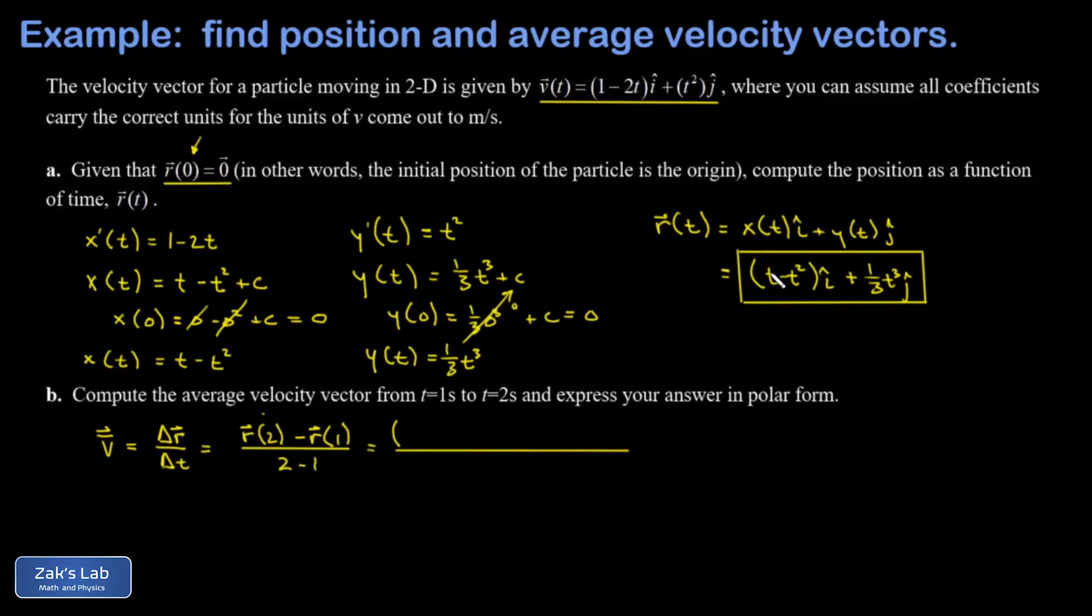And when I do that I get a two minus two squared for the i hat piece, that's two minus four or negative two. And when I look at the y component that's one third times two cubed or eight thirds, so I have a plus eight thirds j hat. So there's r of two.